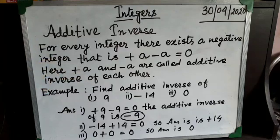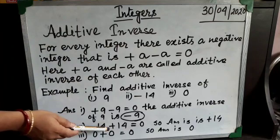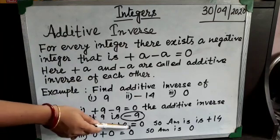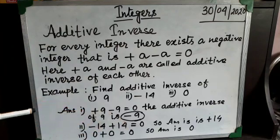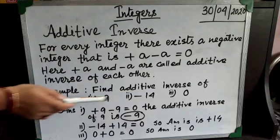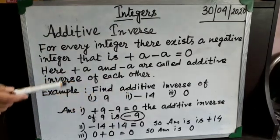My next example is minus 14. If we add plus 14 with it, again the total result becomes zero. That means the additive inverse of minus 14 is plus 14.